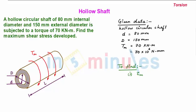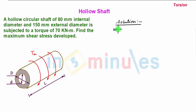We know the torsional formula: Tm/J = τm/R, where Tm is maximum torque, J is polar moment of inertia, τm is maximum shear stress, and R is maximum outer radius.